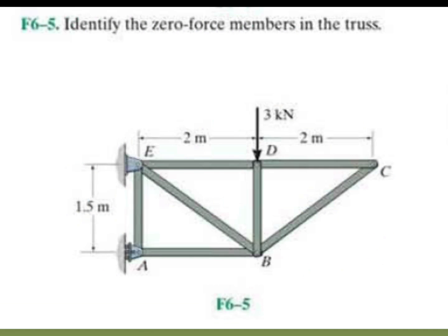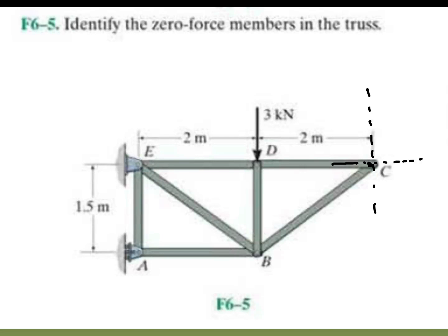In this next example, identify the zero force members in the truss. At point C, taking the axis along this direction — this is the y-axis and the other side is the x-axis. In the y-axis direction, the only force is FBC. We don't know whether FBC is compressive or tensile, but along the y direction only FBC has a cosine theta component, so FBC will become zero.